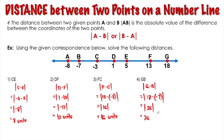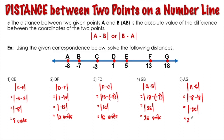Now let's solve the last example: the distance between A and G. Using the formula, we have the absolute value of A minus G. A is negative 8 minus G is 18, which gives us the absolute value of negative 26. Solving this gives us 26 units. And this is the distance between point A and point G.